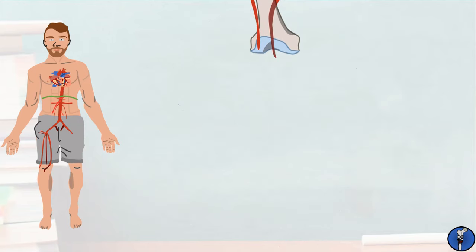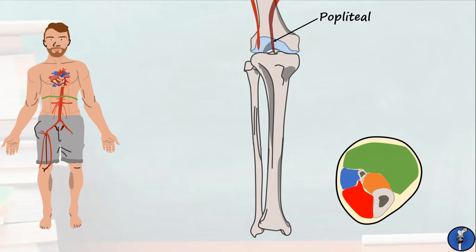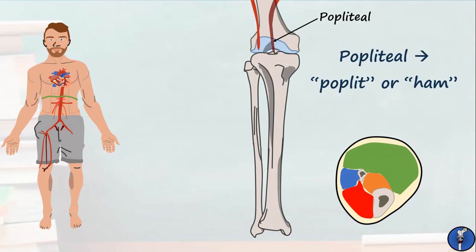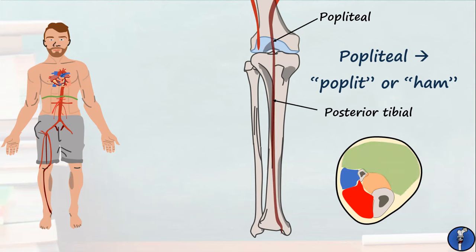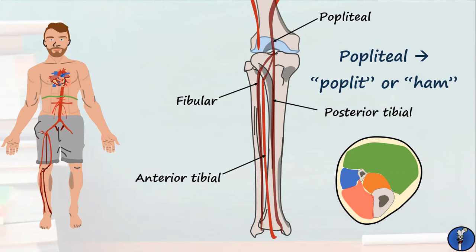The popliteal artery sits just behind the knee. This artery gets its name from the Latin word for ham, due to its close association with the hamstring muscles. The popliteal artery produces three main branches: the posterior tibial, which supplies the posterior compartments of the leg; the fibular, which supplies the lateral compartment; and the anterior tibial, which supplies the anterior compartment. The anterior tibial artery also produces a dorsalis pedis branch, which runs over the dorsum of the foot. The posterior tibial and dorsalis pedis arteries are commonly palpated during a cardiovascular exam.